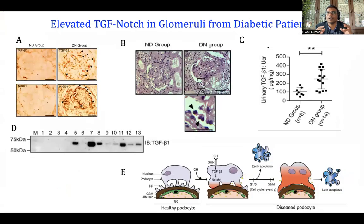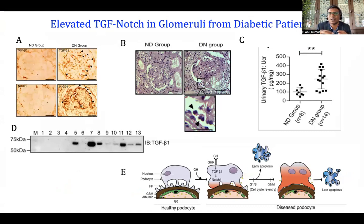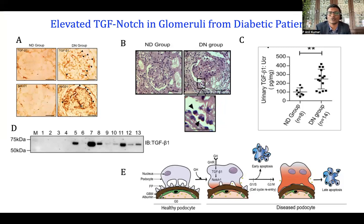We validated these in vitro findings by verifying in biopsy sections from diabetic patients, obtained through institutional approval. We probed for TGFβ1 and NICD1 (Notch intracellular domain), and found excess accumulation of TGFβ1 and NICD1 in the glomeruli from diabetic nephropathy patients. Histological analysis suggested that podocytes are dropping from the glomerulus and falling into the urinary space, as seen in panel B. Panels C and D show an increased ratio of urinary TGFβ1 to creatinine, and urinary protein levels were confirmed by Western blot.